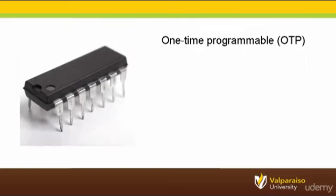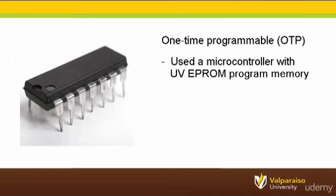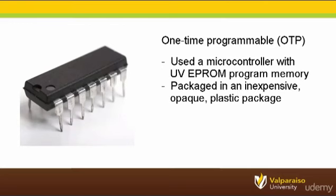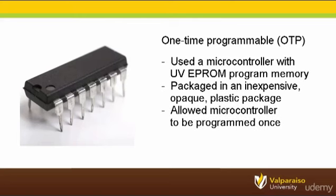Engineers quickly innovated a new way to use EEPROM memory. Instead of using the more expensive ceramic package, a microcontroller with an EEPROM program memory could be mounted inside of a traditional, opaque, significantly less expensive plastic package. This allowed companies to purchase unprogrammed microcontrollers at a cost only slightly more expensive than the mask ROM microcontrollers and program them at the time of assembly right into their embedded system. The only disadvantage was that since the plastic packages were opaque, companies lost the ability to erase the microcontrollers and reprogram. In most cases, this was considered acceptable, and one-time programmable or OTP program memories quickly became quite popular.